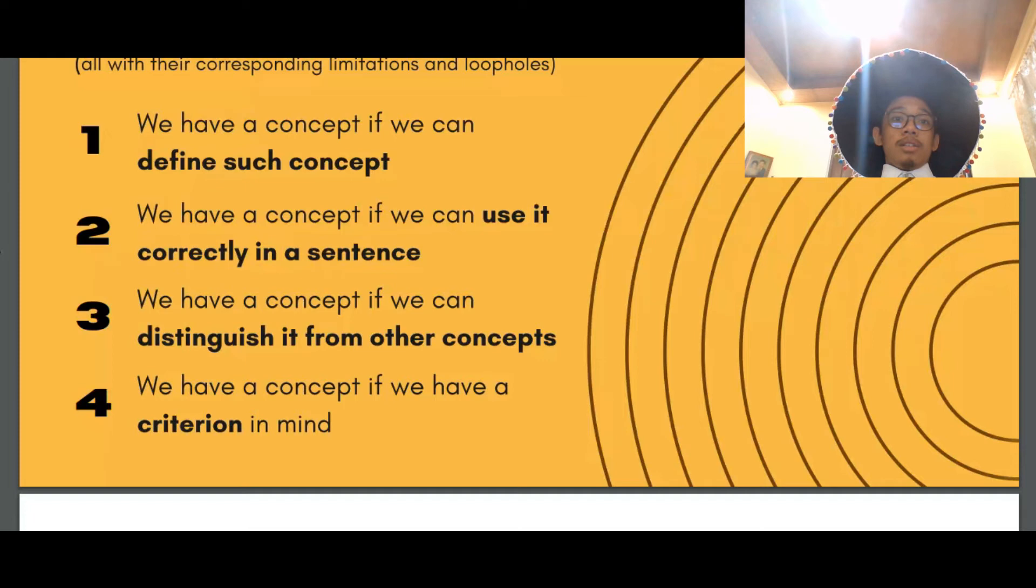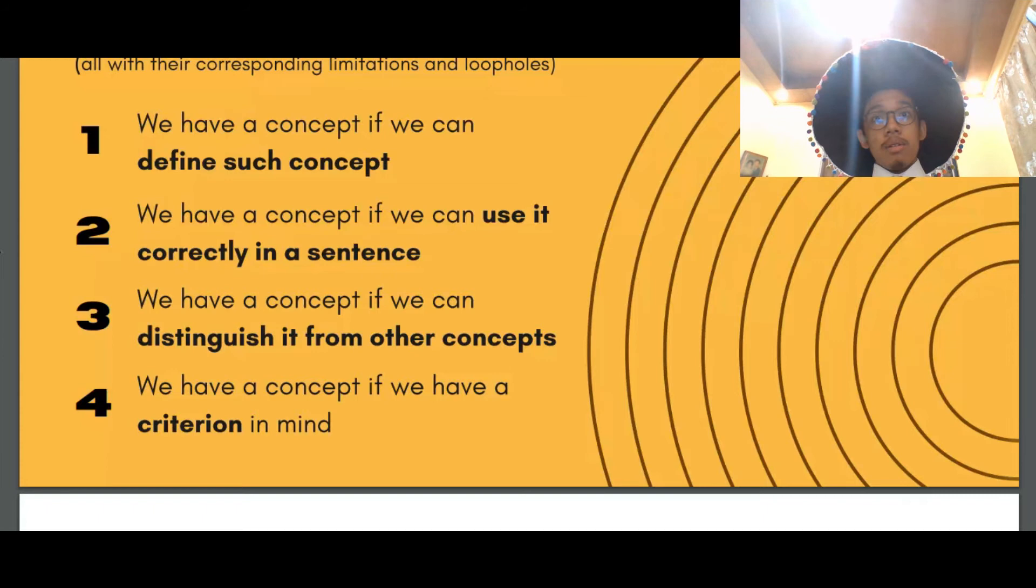To say the least, we can define simple words like a dog, cat, left, right, up, and down. But he argued that defining a word is not required in having a concept.